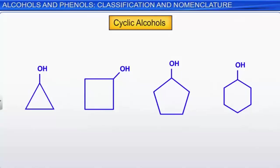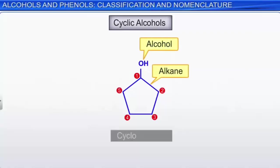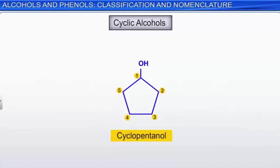Cyclic alcohols are named in a similar manner. Count the number of carbon atoms in the ring, use the prefix 'cyclo' and the alkane name for that number of carbons, then drop the 'e' and replace it with the suffix '-ol.' The location of the hydroxyl group on the ring is considered to be carbon-1. For example, a ring with 5 carbon atoms is cyclopentanol.